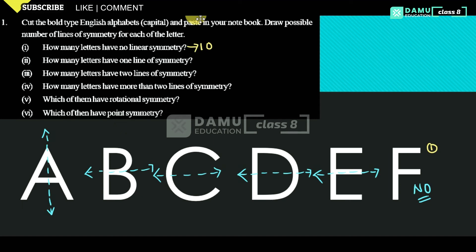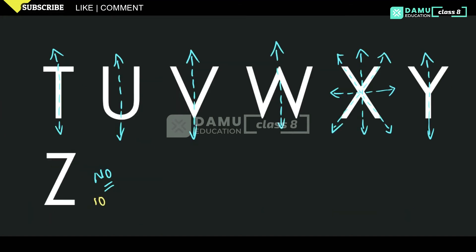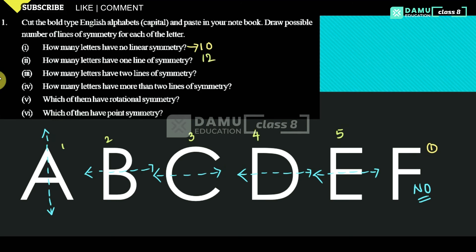Next question: how many letters have one line of symmetry? Counting them — A, B, C, D, E, K, M, T, U, V, W, Y — that is twelve letters which have one line of symmetry.